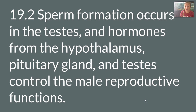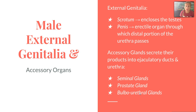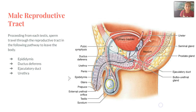We're going to get into both reproductive systems separately, starting with Section 2, the male reproductive system. The external genitalia for the male is the scrotum. It encloses the testes and the penis, which is an erectile organ through which the distal portion of the urethra passes. The accessory glands that secrete into the ejaculatory ducts and urethra include the seminal glands, the prostate gland, and the bulbo-urethral gland. The male reproductive tract is made up of the epididymis, which goes up through the ductus deferens into the ejaculatory duct, through the seminal gland, and finally the urethra — that is the pathway sperm will travel and leave the body.